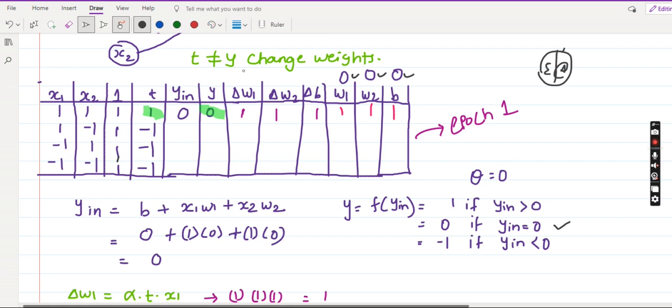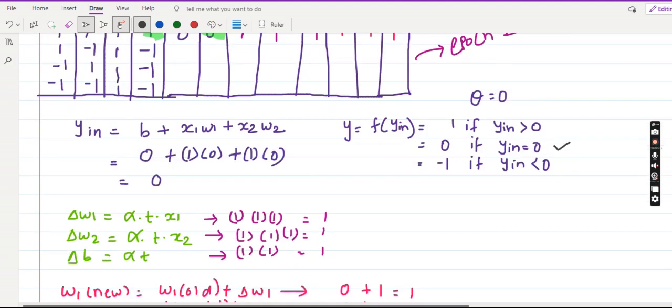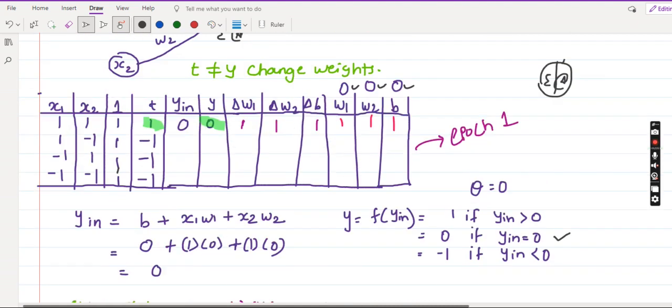Since t is not equal to y we will change the weights. And how do you change the weight? This is the equation. Delta w1 is equal to alpha, that is the learning rate, into t, the target, and into x1. Delta w2 is alpha t x2. Delta b is alpha into t. I calculate all the values. All the values are 1. So this is my change in the weight. So my delta w1, delta w2, and delta b all three become 1.